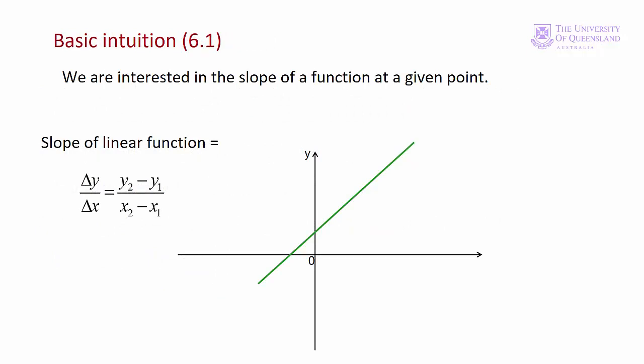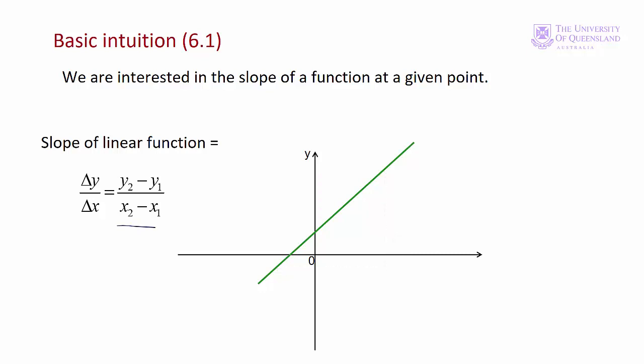Let's look at the basics. We want to determine the slope of a function. We'll start with a linear function — that's the simplest type. The slope is the same at any point along the function. The slope is the change in y over the change in x, or (y2 - y1) / (x2 - x1). For a linear function it's the same at any point, whether we measure delta y and delta x here, there, or there. So it's quite simple to find the slope of a linear function.